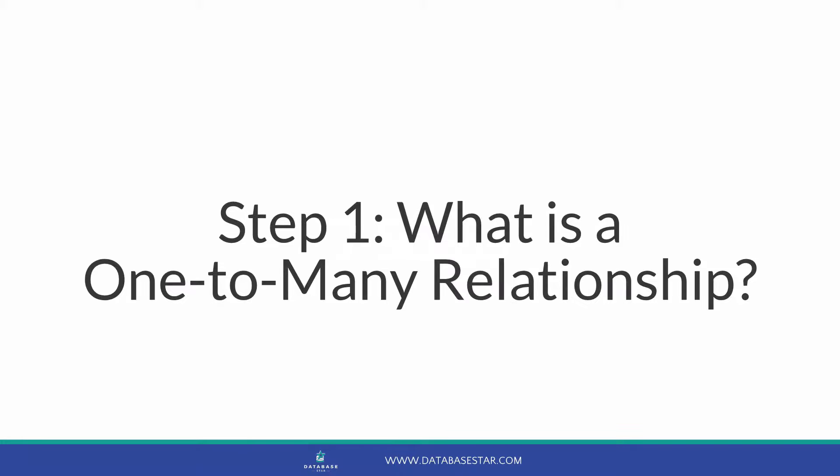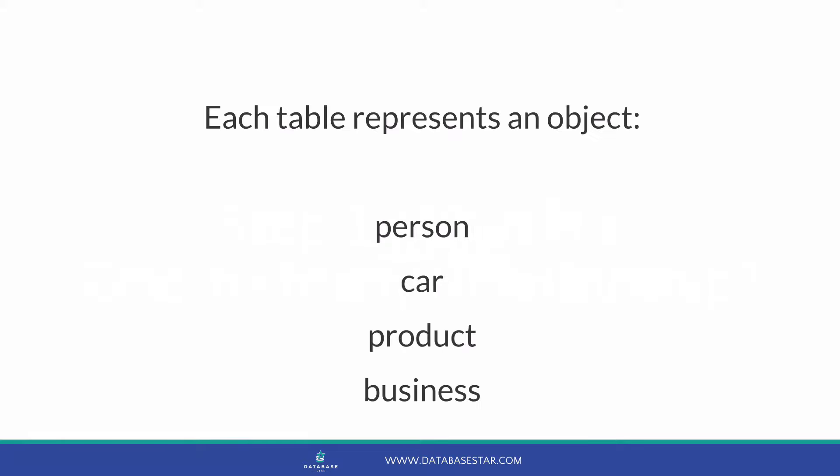Step one is to understand the definition of a one-to-many relationship. In a database, tables are created to store data. Each table usually represents an object that you want to store data about, such as a person, a car, a product, a business, and so on. For a database to work efficiently, you need to be able to relate these different tables together. This is how you can store data where it needs to be stored, and also find data that relates to each other when needed.